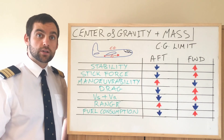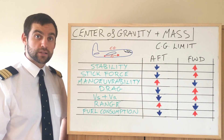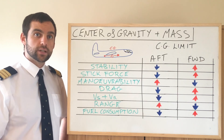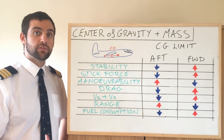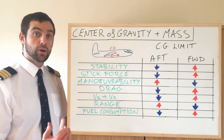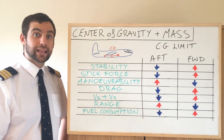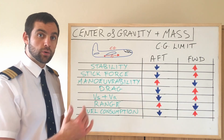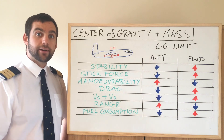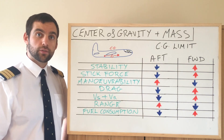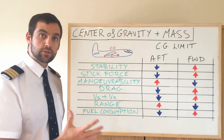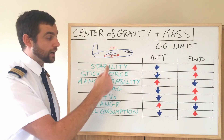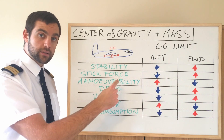This is why a lot of larger aircraft, on long-haul aircraft especially, they can actually move fuel from one tank to another to change the center of gravity in flight as they're burning fuel and their mass is becoming less. So what happens if the center of gravity is forward or aft? Well it changes various characteristics of the aircraft, which we're going to talk about now. The two examples I've given are if the center of gravity is on the aft limit or on the forward limit.